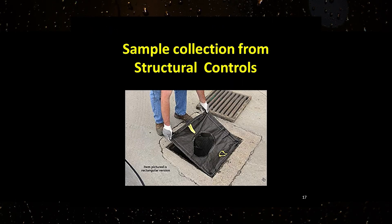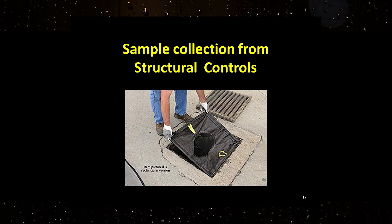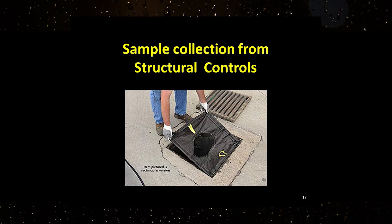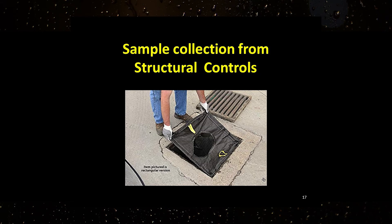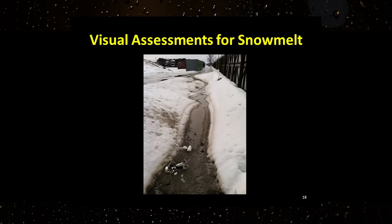Structural controls may be in place to remove contaminants from the stormwater runoff. The stormwater sample should be collected after the stormwater has passed through the structural control for assessment of the stormwater discharging from the facility. In these situations, sample collection will be more difficult and specialized equipment may be needed — this information should be included in the written procedures. Collection of a sample from a snow melt event must be during a period of measurable discharge; basically, there must be flowing meltwater.